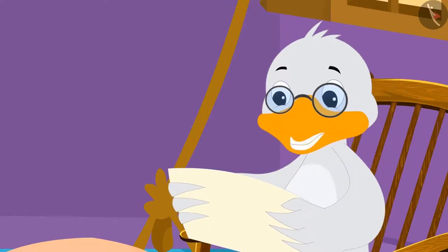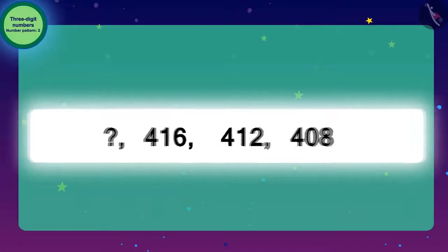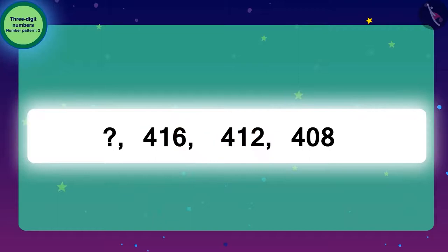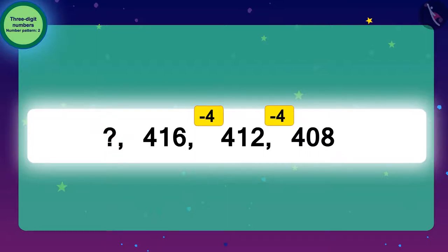Let me explain this to you. Come, let's also find an answer to this code with Raju. Look at this number pattern — here, we need to find the first number. Let us find the pattern from the next two numbers. To go from 416 to 412, we have to take back 4 steps, meaning we have to subtract 4. Then, to reach from 412 to 408, again we have to subtract 4. Similarly, to find the next number of this pattern, we subtract 4 each time.